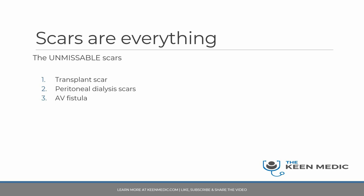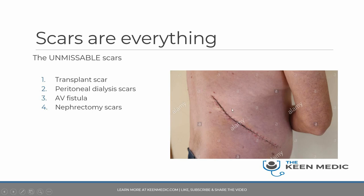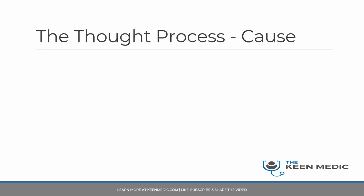Lastly, look for nephrectomy scars — the scar from surgical removal of a kidney. This is what an open nephrectomy scar looks like. Some patients have laparoscopic nephrectomies, but open nephrectomy scars are more commonly seen in MRCP PACES. Make sure you have seen this in real life and can put two and two together, especially if the patient also has a transplant scar.